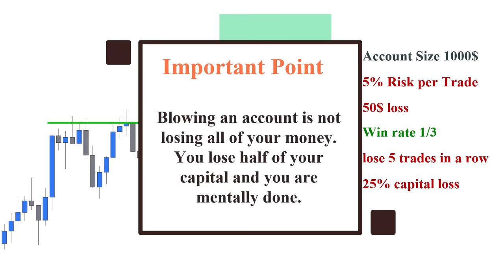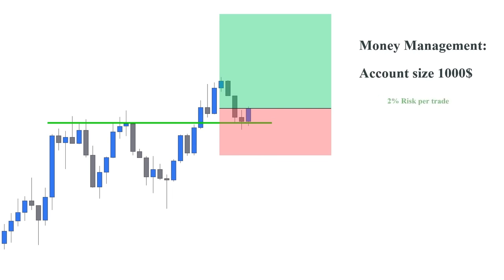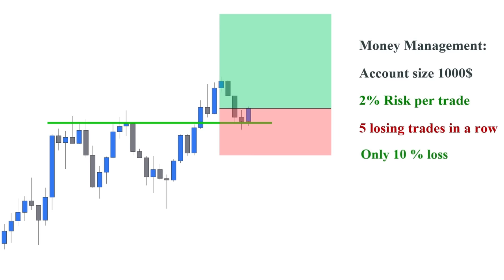Blowing an account is not losing all of your money. You lose half of your capital and you are mentally done. So this is where money management comes in. If we risk 2% of our initial account size on every trade, five losing trades in a row will take only 10% of our capital, which we can easily recover in the good trading days. Later in this video, I will explain some of the interesting techniques of money management to maximize profits, but now let's continue with risk management.